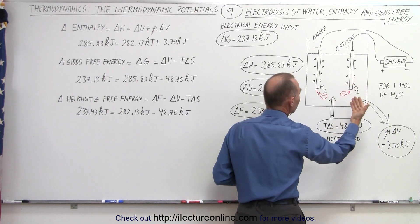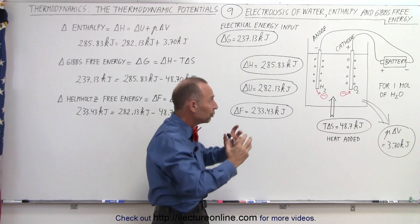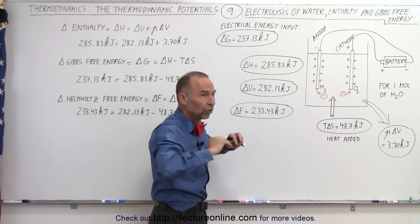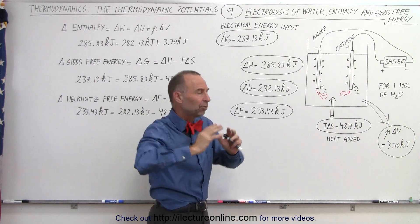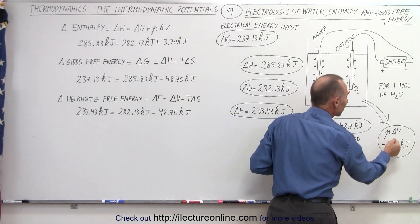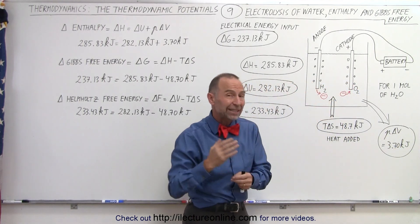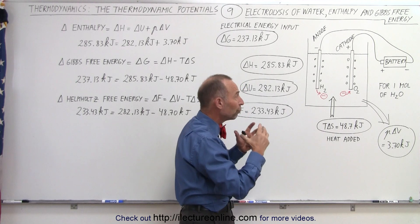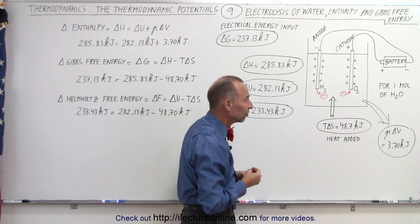At the cathode, oxygen gas is produced. So essentially, we take water, separate the oxygen from the hydrogen, and produce hydrogen and oxygen bubbles. Those then have to do work because they expand against the atmosphere, so work is done. So we can see that P delta V in the process is a positive quantity, 3.7 kilojoules per mole of water that's being changed from water into hydrogen and oxygen gas.